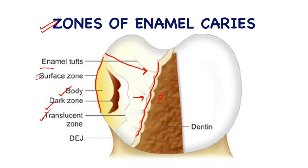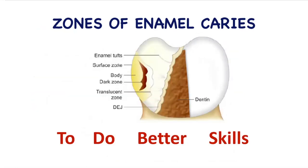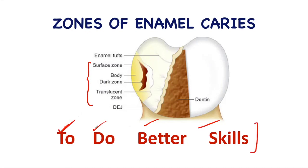How do you remember the sequence of these zones? To remember the proper sequence of these zones of enamel caries, just remember this simple line: 'to do better skills.' T means translucent zone, D means dark zone, B means body of the lesion, and S means the surface zone.